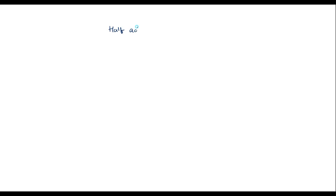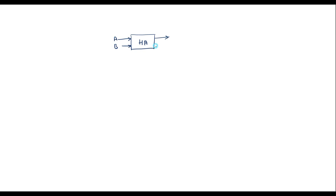For example, we have already studied about the half adder circuit. As we know, the half adder circuit has two inputs — I will call them A and B — and two outputs: sum and carry. We have studied about half adder in basic electronics. The Boolean expression for sum is given by A XOR B, and the Boolean expression for carry is given by A AND B.